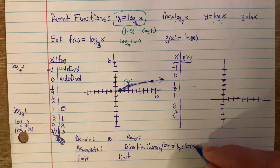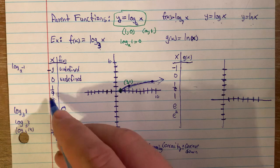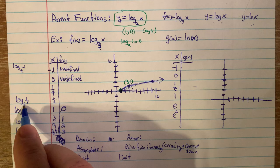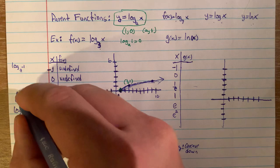Hopefully you can see this is growing — it's increasing. The direction of a log parent function is always increasing, but it's growing more and more slowly. It's bending downwards, so it's always concave down. All log parent functions are increasing but concave down.